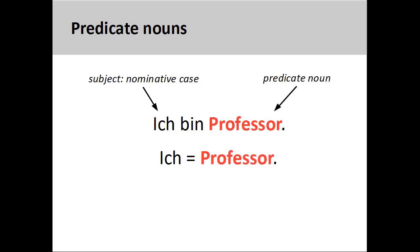It may be useful for you to think about predicate nouns and adjectives in terms of an equal sign. When a linking verb appears in a sentence, then both sides of the sentence, the subject and predicate, will be in the nominative case.